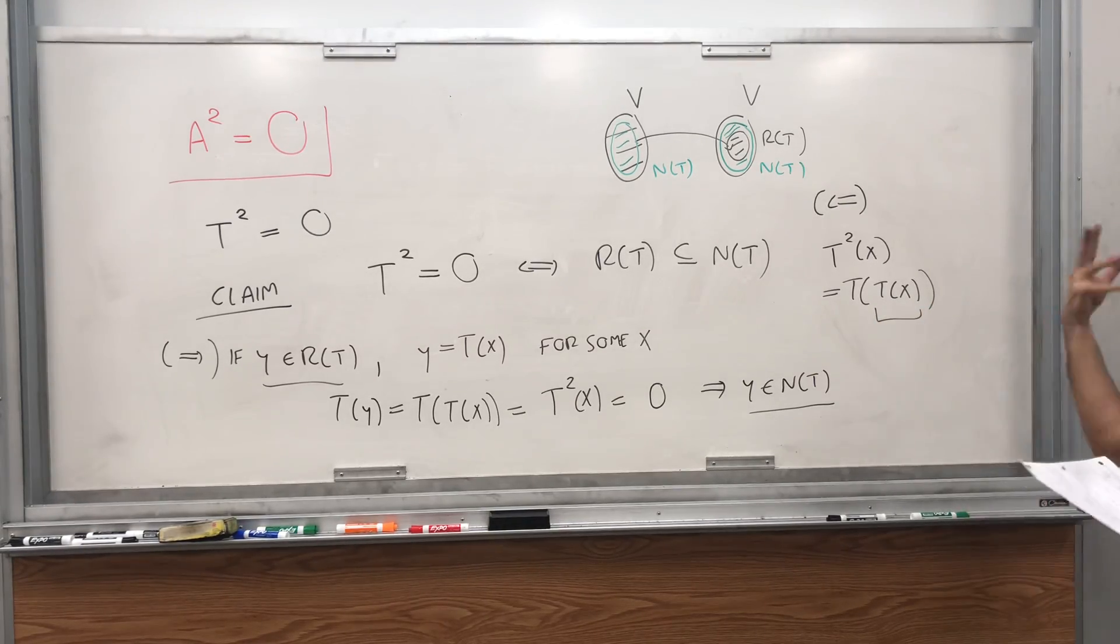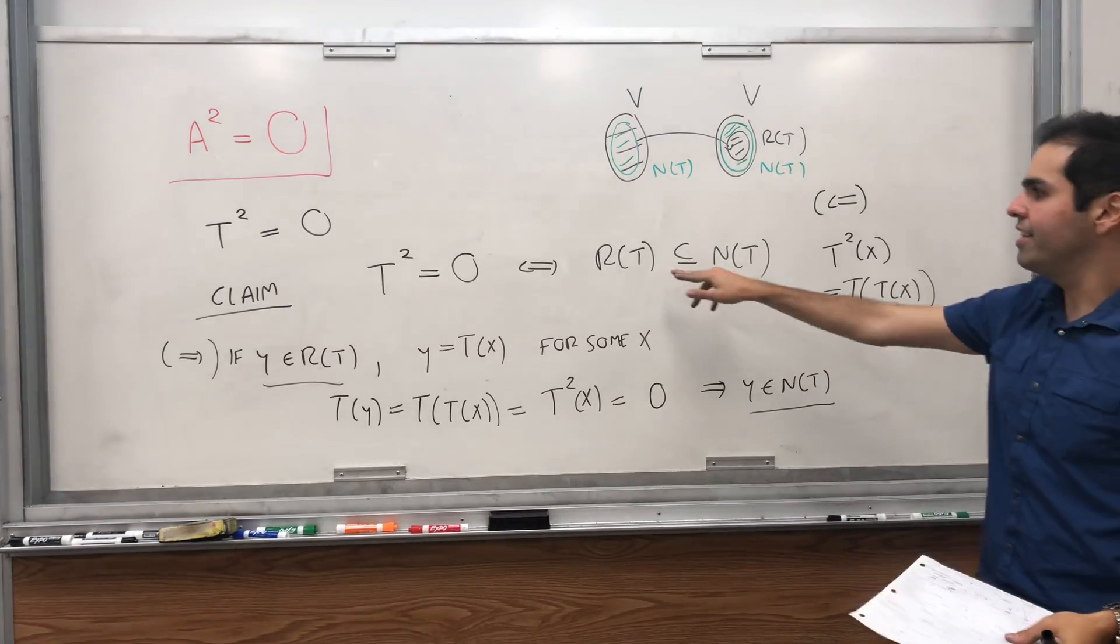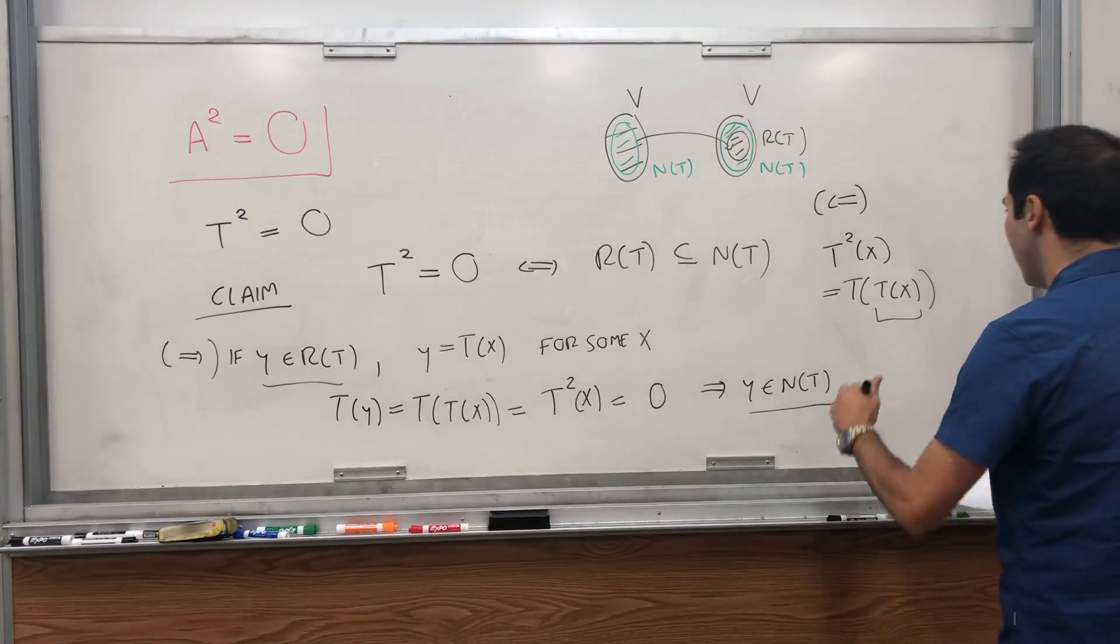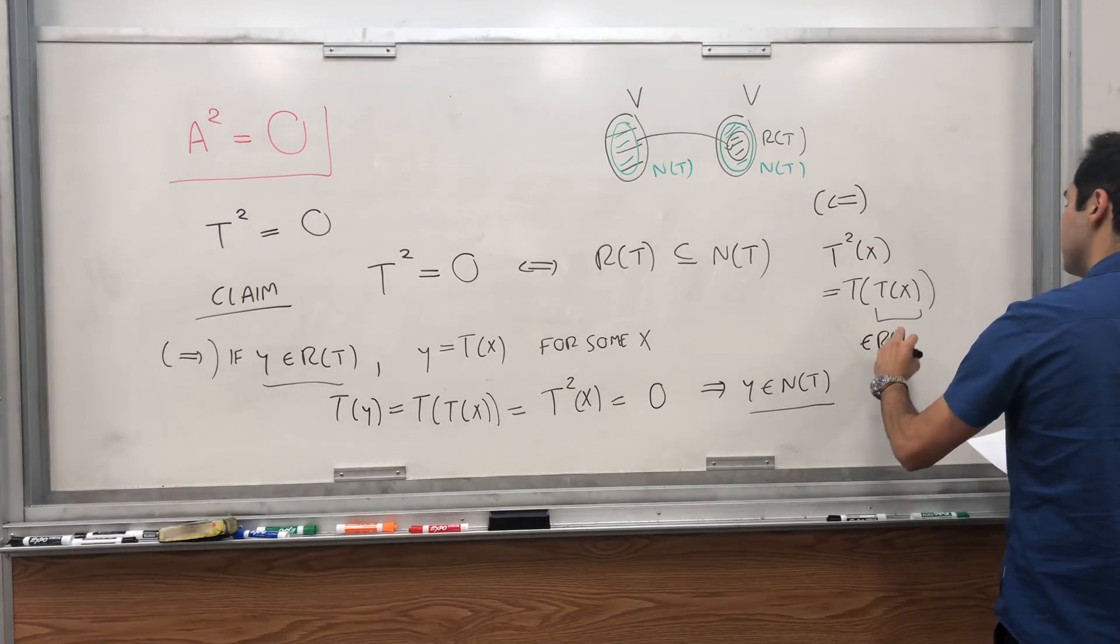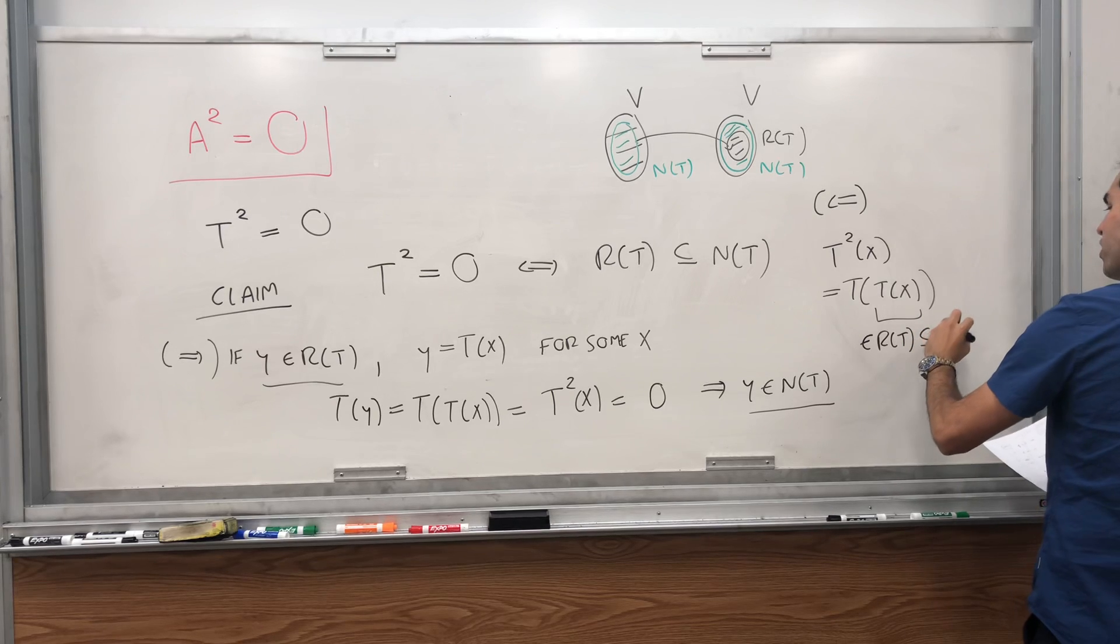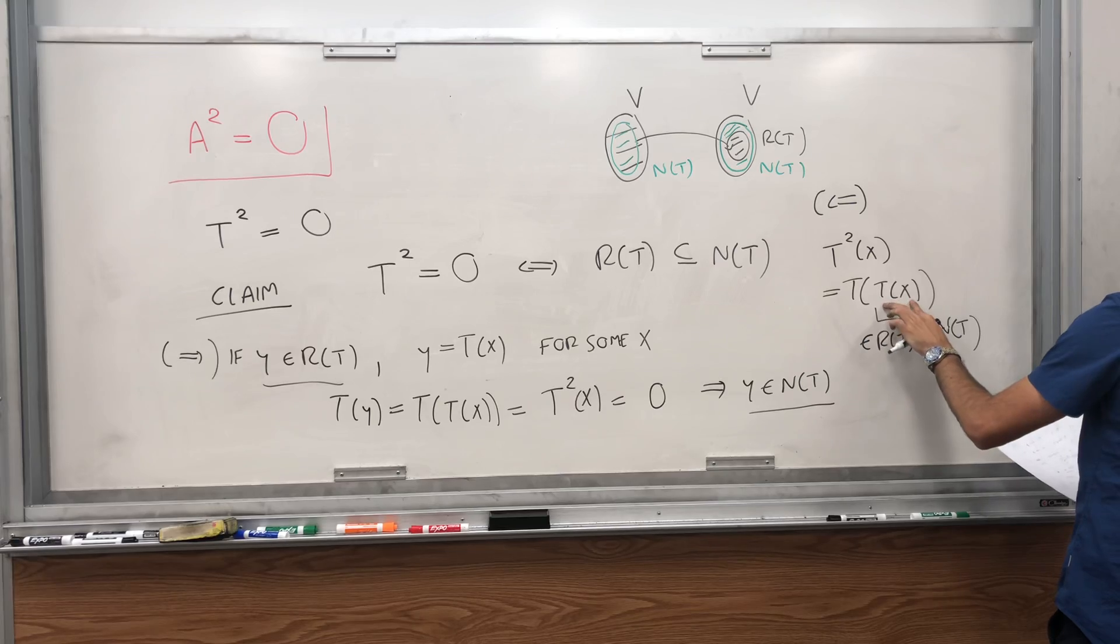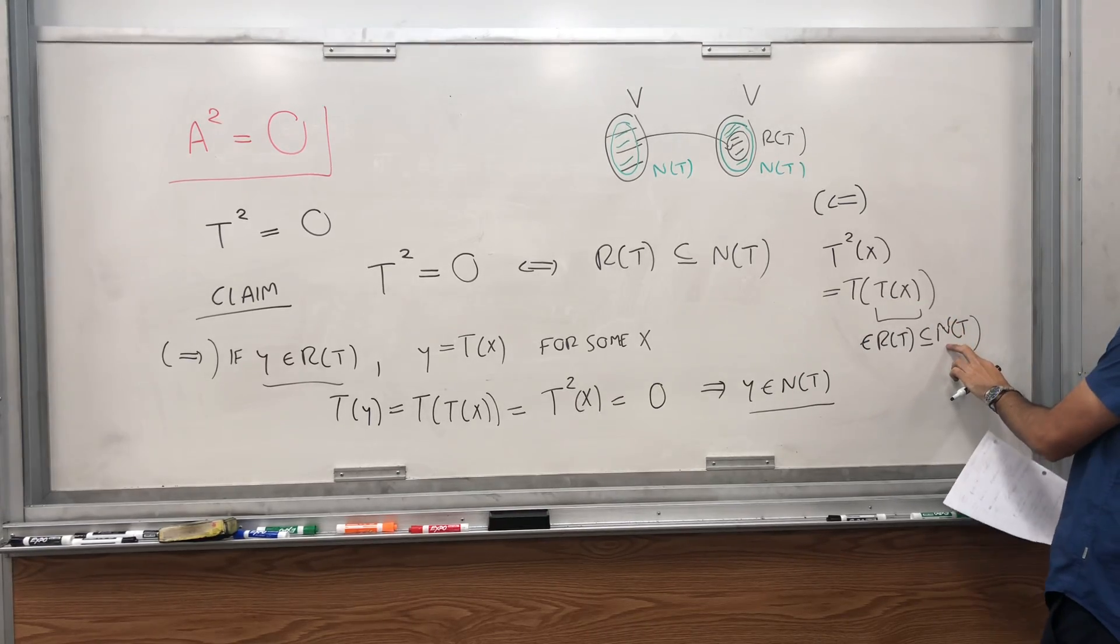T of X is of the form T of something, and that's by definition being in the range. It's a possible output of T. So it's in the range of T, but we know the range is in the null space. So in particular, T of X is in the null space.